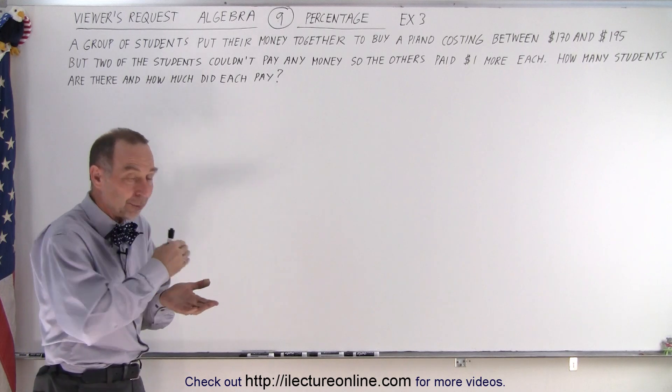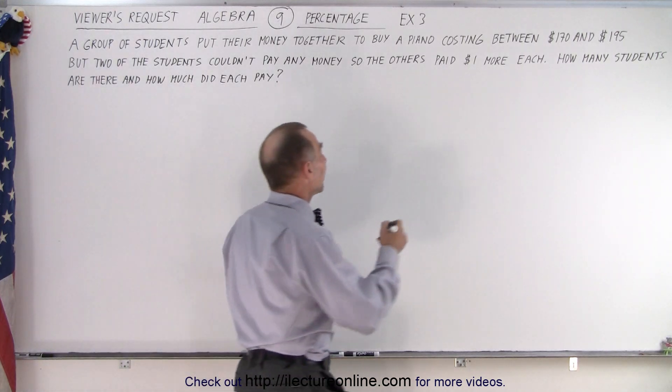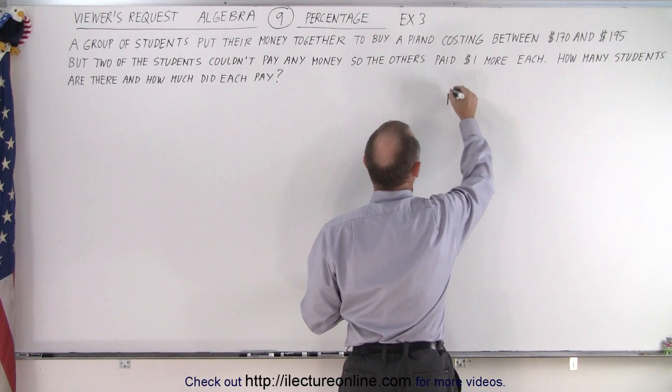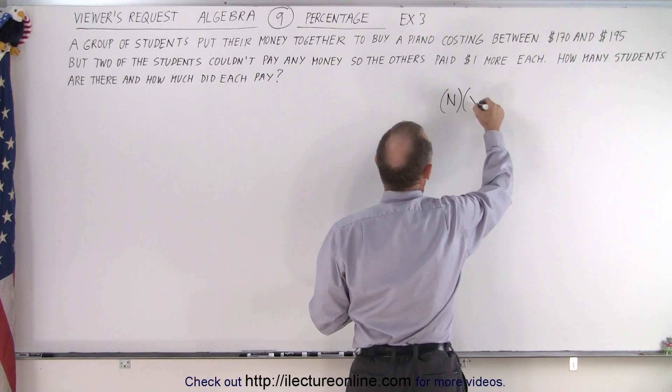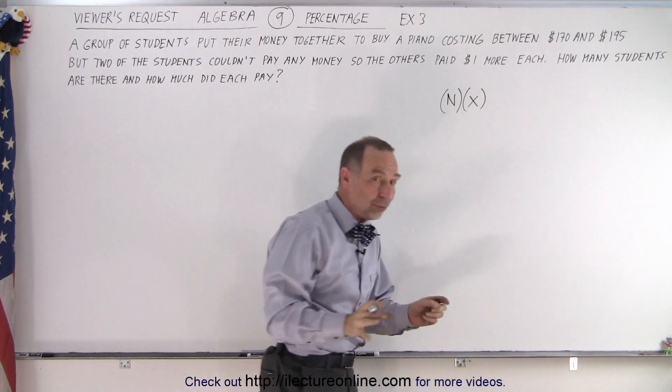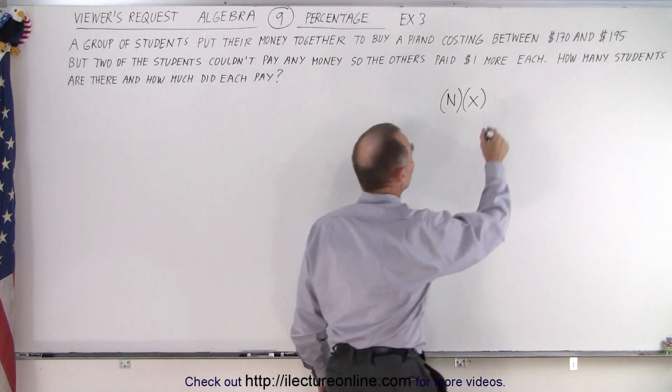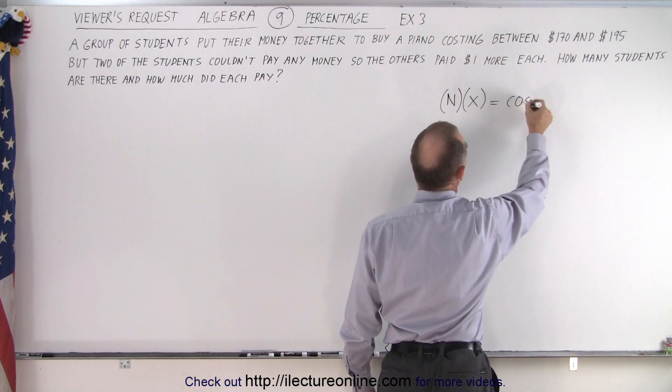So let's say that each student had a certain amount of dollars. So we can say that there were n students and they paid x each, assuming that all of them could pay. And that would then equal to the cost of the piano.